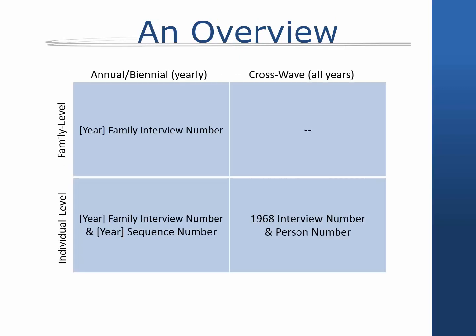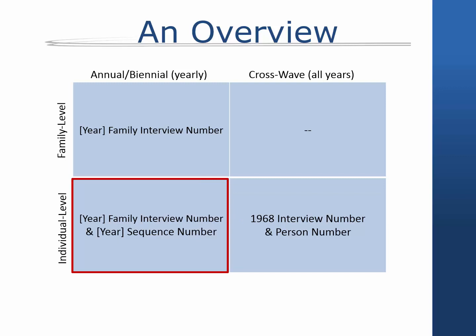Individuals are assigned identifier variables for the study and identifier variables for each wave. The unique ID for the study is made of two variables — one indicating their original 1968 family, and the other indicating their number within that family, or person number. In addition, each wave, each individual is assigned a wave-specific ID: one indicating their family unit in the current year, and the other indicating their sequence number within that family in that year.